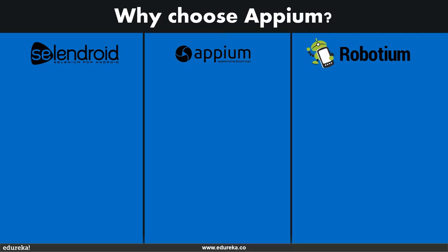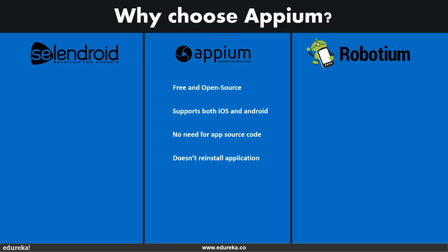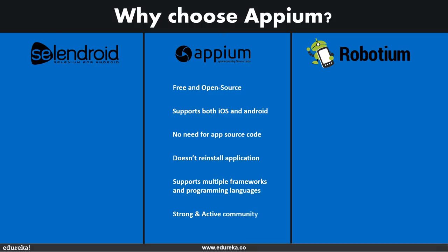Appium's key features include: it's free and open source; it supports both iOS and Android for testing; there is no need for the app source code to be available to the tester; Appium never reinstalls the application because it believes in testing the app that you will actually release to the marketplace; it supports multiple frameworks and programming languages like Ruby, Scala, Kotlin, Java, Python, and others; and it has a strong, active, and growing community.